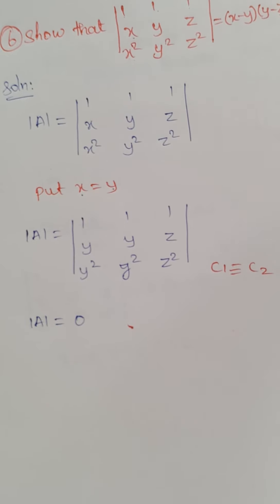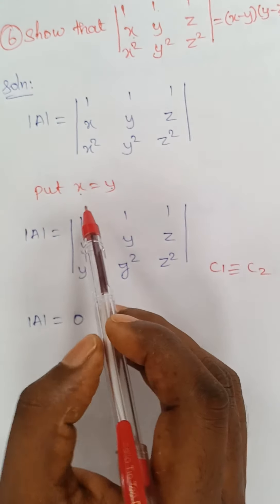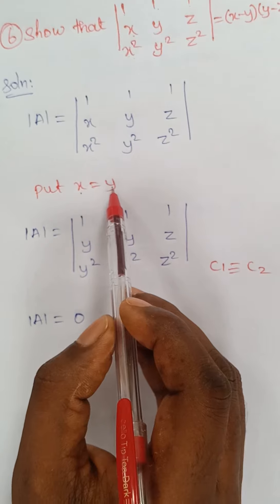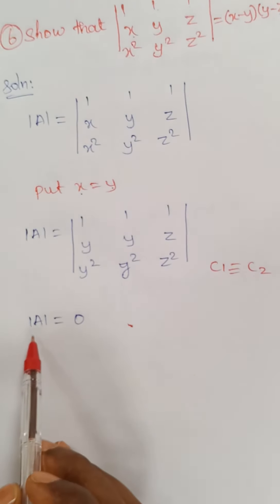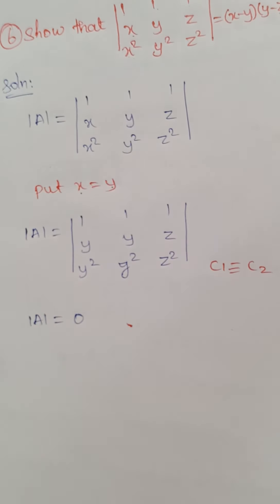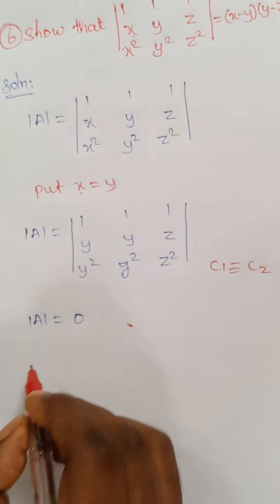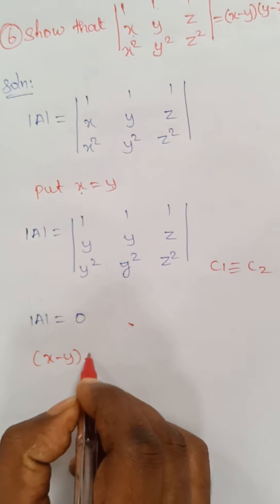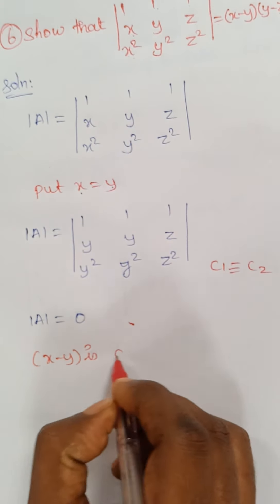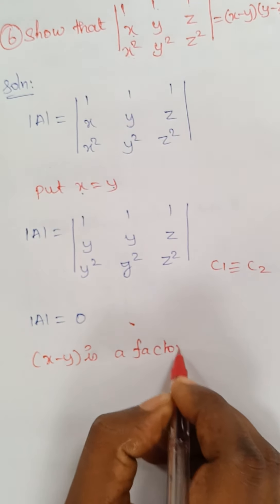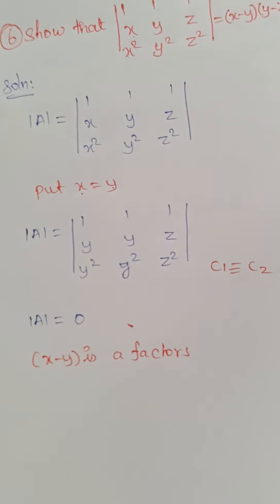Column 1 and column 2 are identical, therefore the determinant of A is equal to 0. Since putting x equal to y makes the determinant equal to 0, therefore (x−y) is a factor.